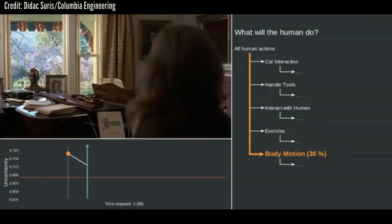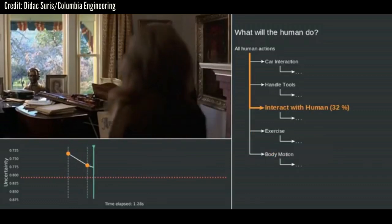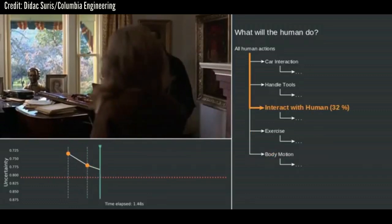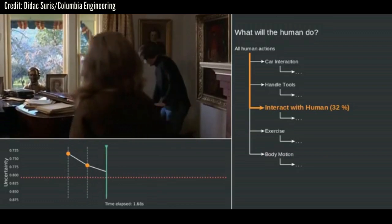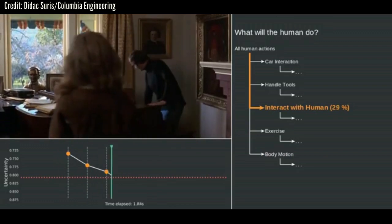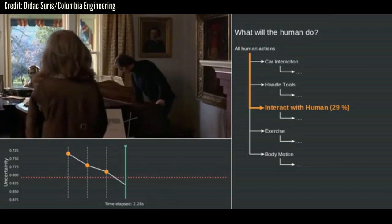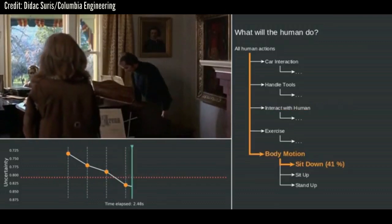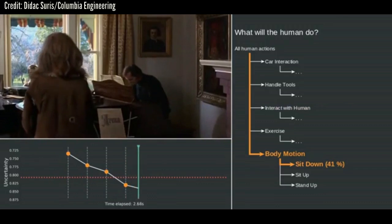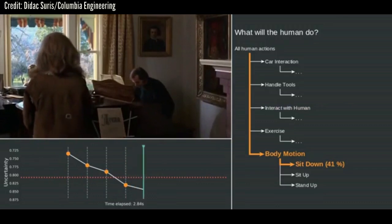Predicting what someone is about to do next based on their body language comes naturally to humans, but not so far to computers. When we meet another person, they might greet us with a hello, handshake, or even a fist bump. We may not know which gesture will be used, but we can read the situation and respond appropriately.